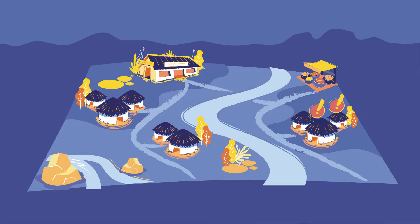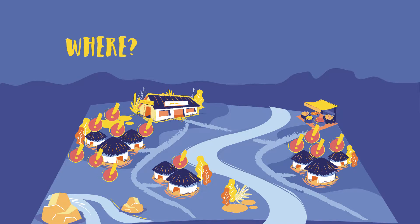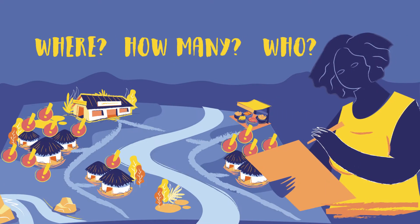Imagine there was a measles outbreak in your community. You would need to understand the situation to determine how best to respond. For example, where specifically is this happening? How many people are affected? Which populations are most at risk? Analyzing surveillance information can help you find answers.